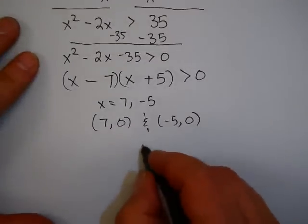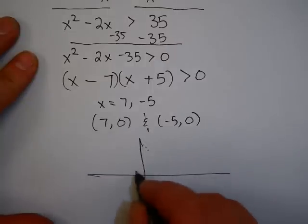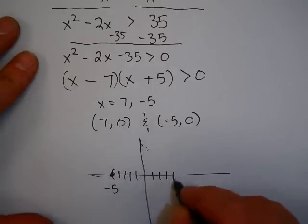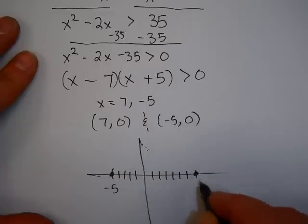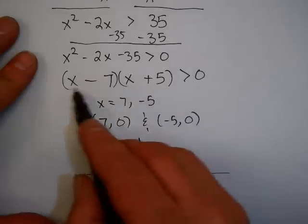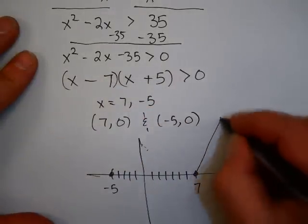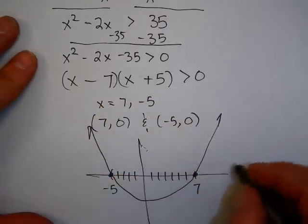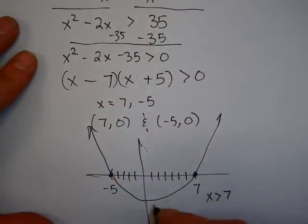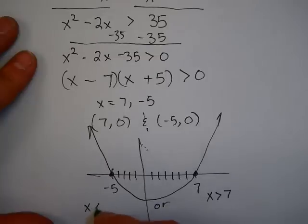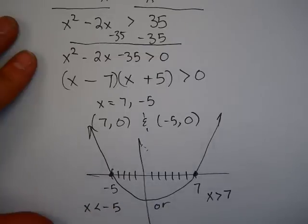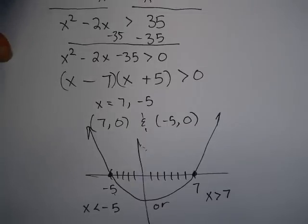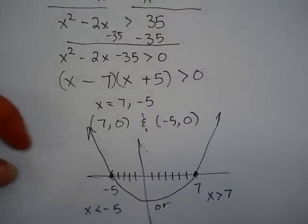If you think about a graph, here's negative 5, here's 7. Since this is greater than 0, we're looking for where it's above the x-axis. That happens here when x is greater than 7 or when x is less than negative 5. And I don't include 7 and negative 5 because I don't have an equal sign there.